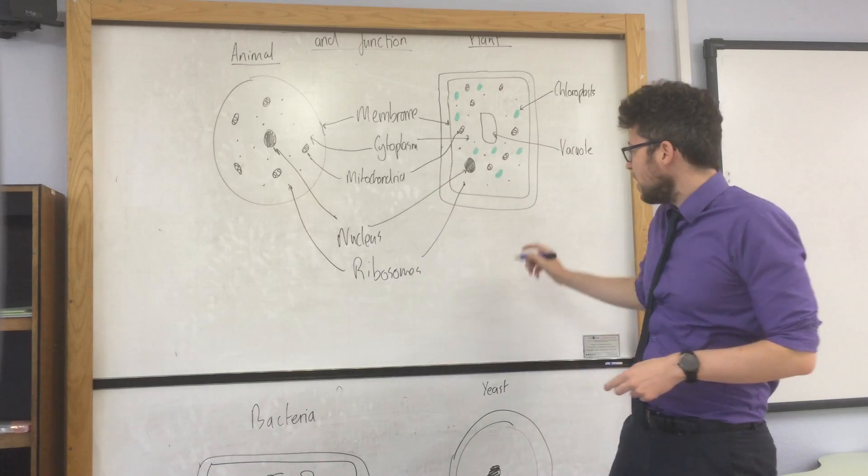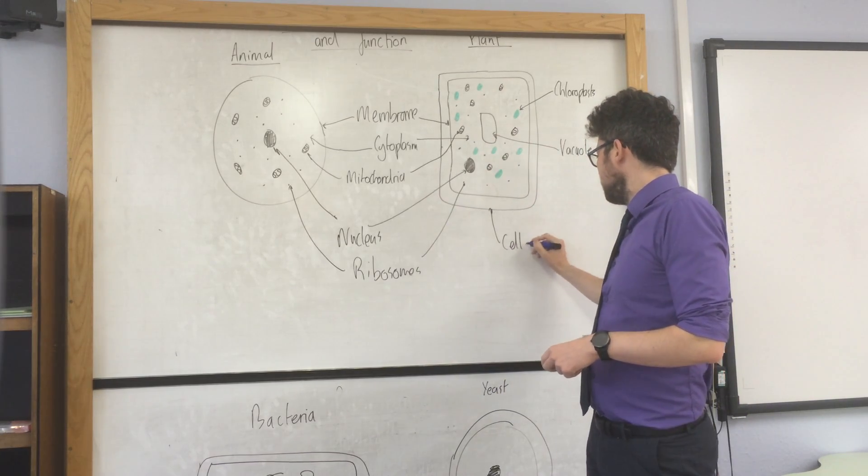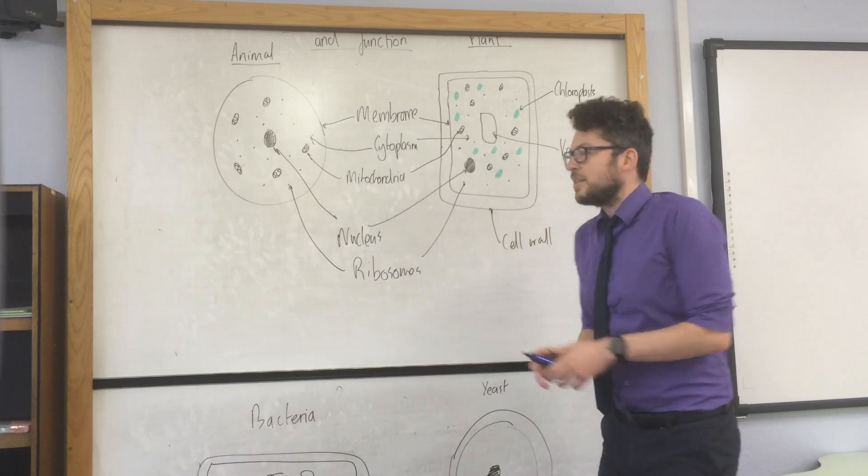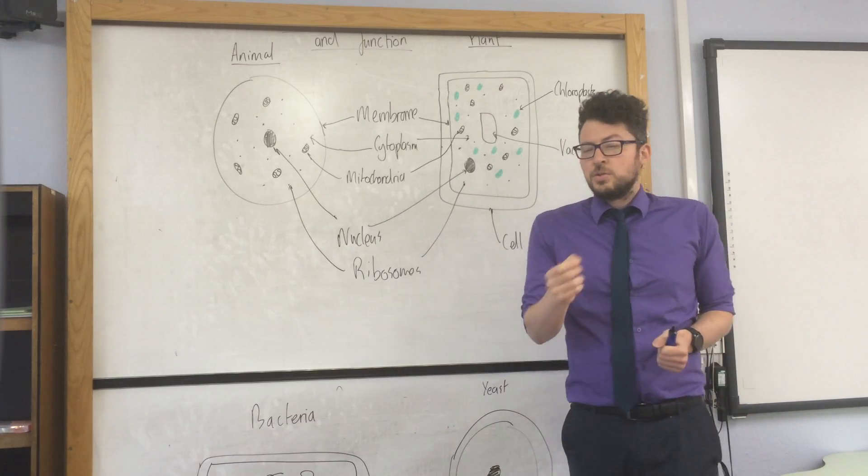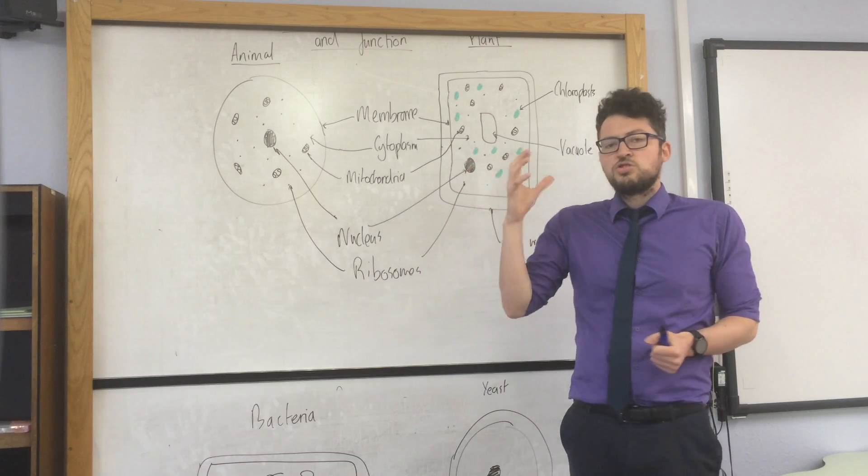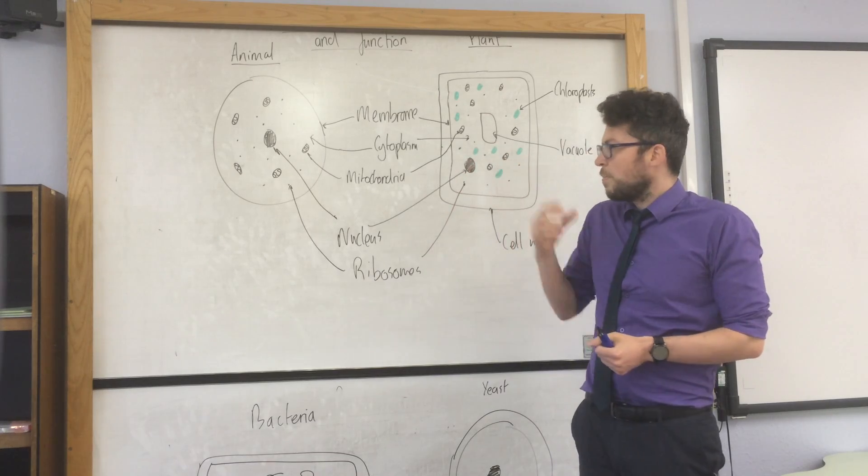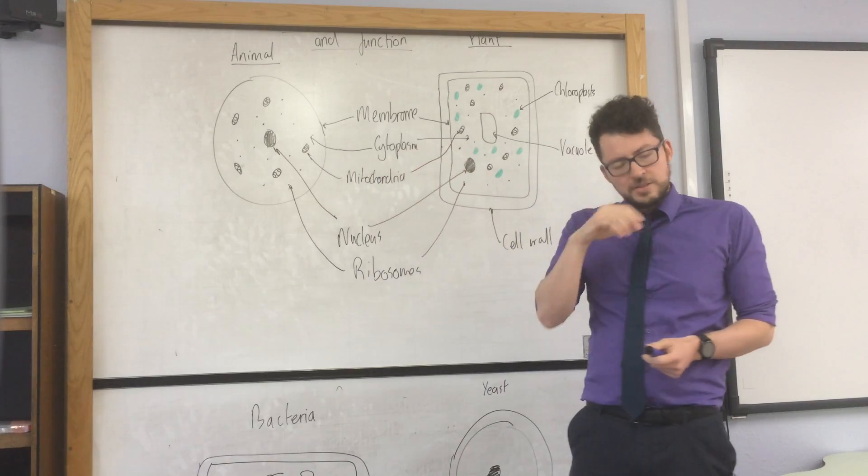And finally, they have a cell wall. That cell wall is made from something called cellulose, and it provides structure and support for the plant cell. So this is a feature of animal and plant cells.